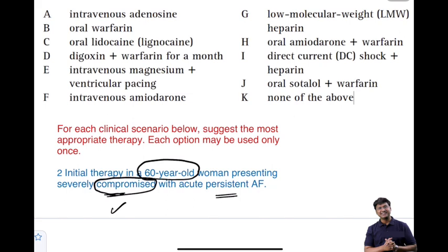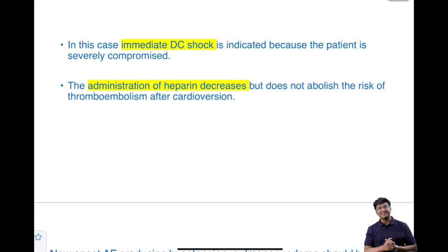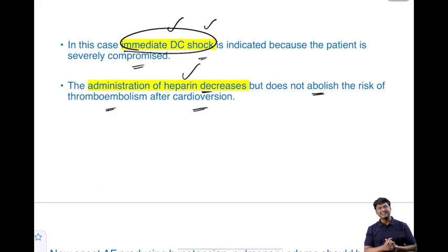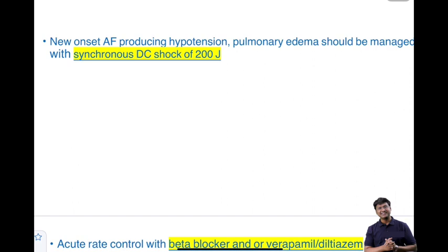Among the options, search for DC shock — the answer is DC shock plus heparin. Immediate DC shock is indicated because the patient is severely compromised, and administration of heparin decreases but does not abolish the risk of thromboembolism after cardioversion. When planning immediate DC shock, the strength to be applied is 200 joules of synchronized DC shock.